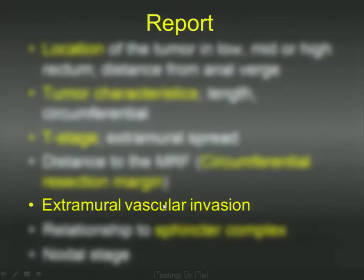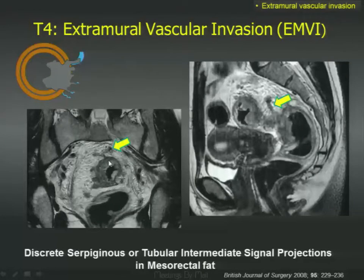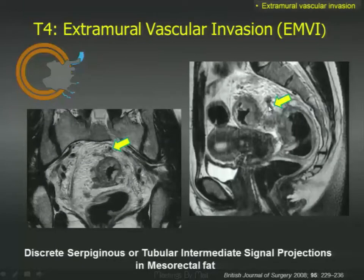Extramural vascular invasion is where you see serpentine vessels with tumor thrombus within them, originating from the tumor and extending outward — you can clearly identify them as vessels. When that is present, that is a sign of bad prognosis, and you need to mention it in your report.